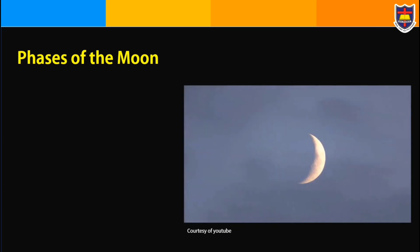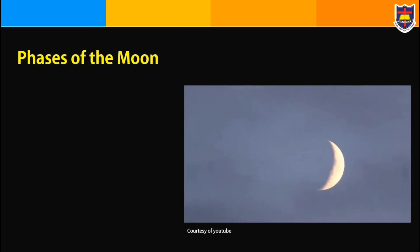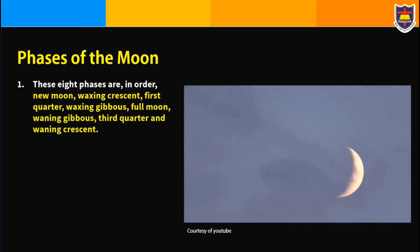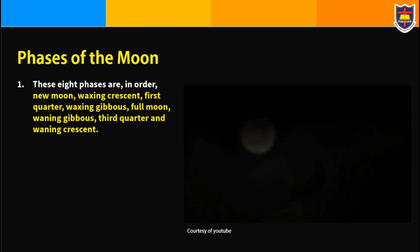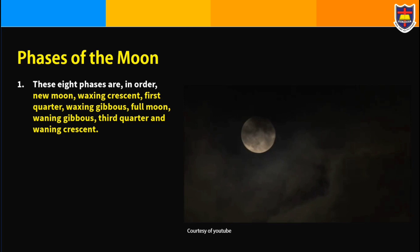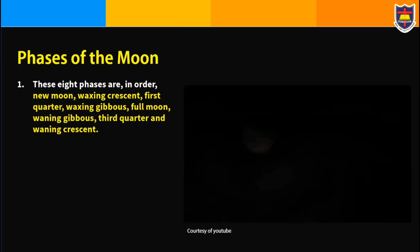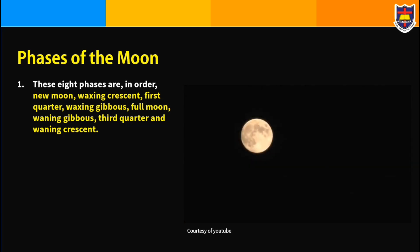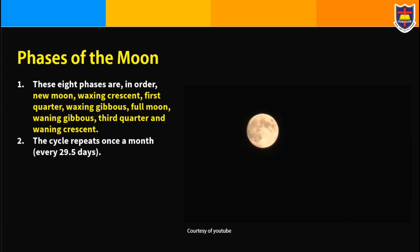Now, the phases of the moon. These eight phases in order are: new moon, waxing crescent, first quarter, waxing gibbous, full moon, waning gibbous, third quarter, and waning crescent. The cycle repeats once a month, every 29.5 days.